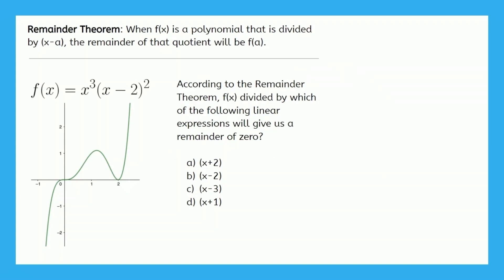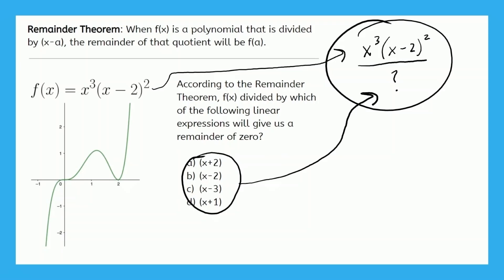So it says, according to the remainder theorem, f(x) divided by which of the following linear expressions will give us a remainder of 0? Now remember that the remainder corresponds to f(a). And you will see some questions that involve a graph and some questions that don't. The graph is not absolutely necessary, but it helps us conceptualize what's happening and what a remainder of 0 really indicates. So what they're asking is which of these four options in the denominator up here, in this division, will make for a remainder of 0.